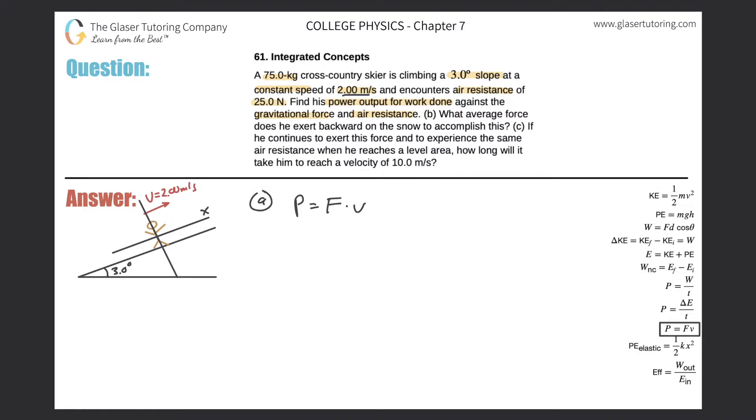So when I draw my set of axes just like I did, this person has a certain weight, and that weight is pointing straight down. Let me draw it a little better. The weight is pointing straight down. So that's the weight.